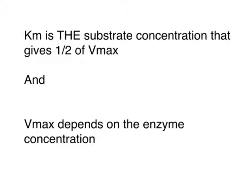We know that Km, the Michaelis constant, is the substrate concentration that gives half of Vmax — that is the definition of the Michaelis constant. We also know that Vmax depends on the enzyme concentration. So if we put these two things together, we could come to the conclusion that if Vmax depends on enzyme concentration and Km is the substrate concentration that gives half of Vmax, then if we increase Vmax we would need more substrate to reach half of Vmax. But unfortunately this is not exactly the right way to see it, and I want to illustrate that.